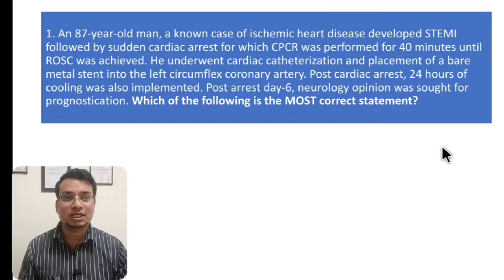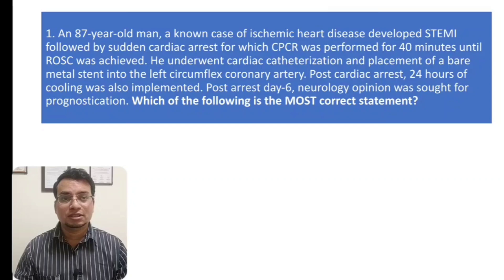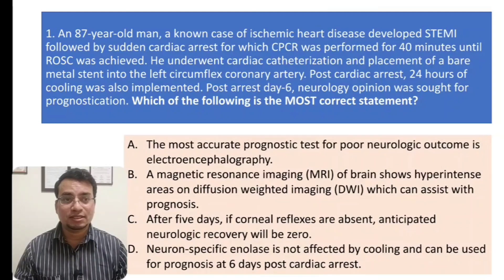Let's begin. An 87-year-old man, a known case of systemic heart disease, developed an ST elevation MI followed by cardiac arrest, for which CPCR was performed for 40 minutes until ROSC was achieved. He underwent cardiac catheterization and placement of a bare metal stent into the left circumflex coronary artery. Post cardiac arrest, 24 hours of cooling was implemented, and on day six in ICU, neurology opinion was sought for prognostication.